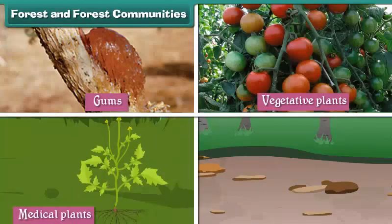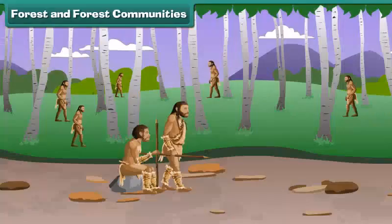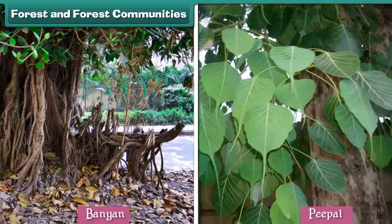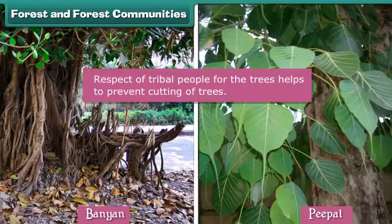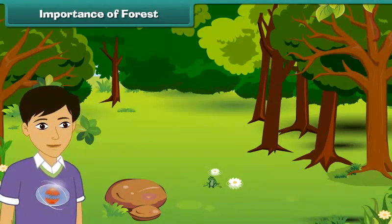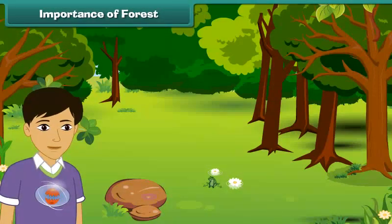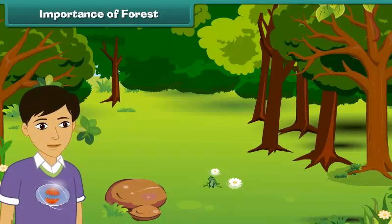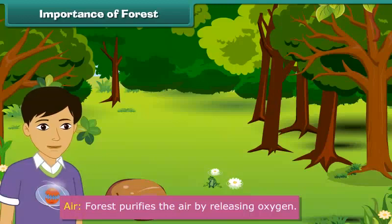Forest and forest communities. The tribal people collect tree leaves and fruits. Tribals earn their livelihood from forest products like gums, vegetative plants, medicinal plants and honey. They get food as well as medicines from the different types of plants found in the forest. Tribals worship trees like banyan and peepal. This respect for the trees helps in their preservation.